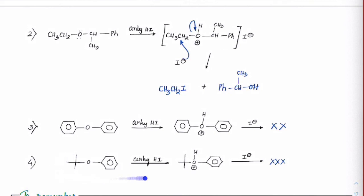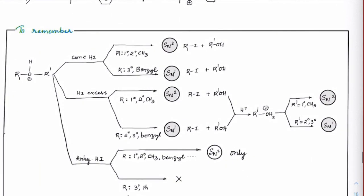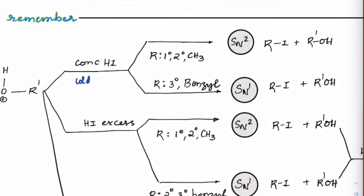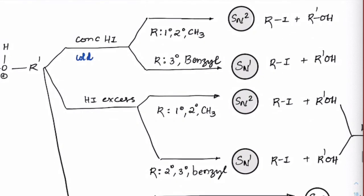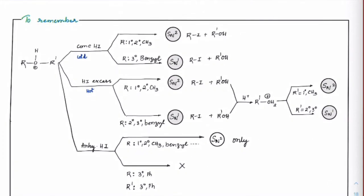A case with bridgehead or di-phenyl carbons that cannot react at all — this has served as evidence that SN1 is hardly favored with anhydrous HI. In conclusion: concentrated HI (or cold concentrated HI) is one case; HI excess (or hot HI excess) is another case; and anhydrous HI is a completely different case with different mechanistic outcomes.